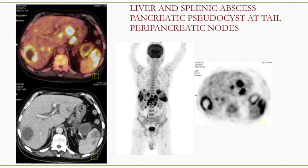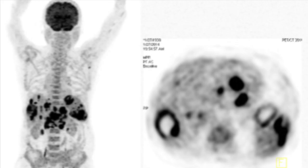This is another case of liver and splenic abscesses presenting as pyrexia of unknown origin. Additionally diagnosed was a pancreatic pseudocyst in a known case of pancreatitis. So here you have a splenic abscess, a liver abscess, and pancreatitis with pseudocyst formation — three different etiologies all leading to pyrexia of unknown origin.